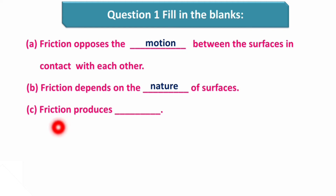Friction produces dash. Friction kya produce kerta hai? Answer is heat. Friction produces heat. Jab do surfaces hain, wo ek dusare ke contact mein hoti aur move kerti hain, toh friction jo hai, wo opposite direction ki wajay se heat produce kerti hai. As explained in the chapter, if you rub two hands together, your palms produce heat, which is because of friction.